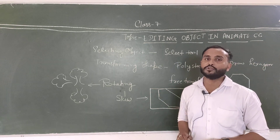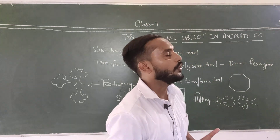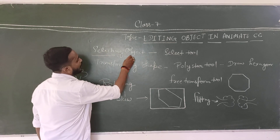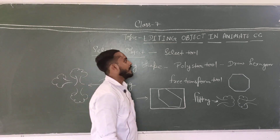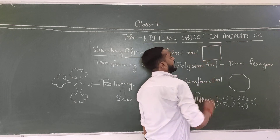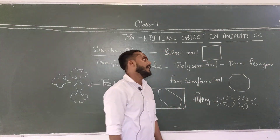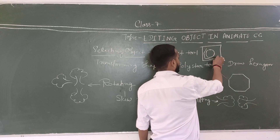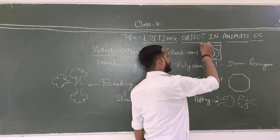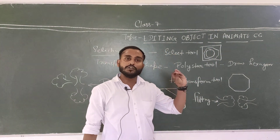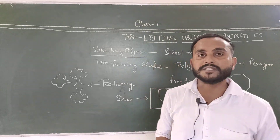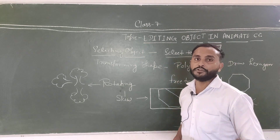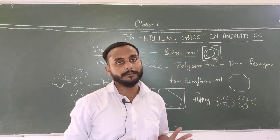Firstly, to use any tool we have to use the tool panel. Our first topic is selecting objects. अगर मैंने कोई project create किया और उसपे कोई object है — जैसे एक circle या hexagon type का कोई shape — and I want to select that object, then we have to use the Selection Tool.